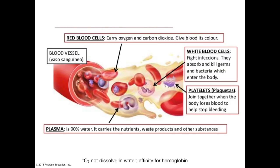A quick word on the blood that's actually flowing through those vessels — what it's made out of and what its makeup looks like. About 8% of your body weight is blood, which has a fluid portion and a cellular portion. The fluid portion is the plasma, which is mostly water containing dissolved nutrients, waste products, and plasma proteins like albumin, which gives blood its viscosity.